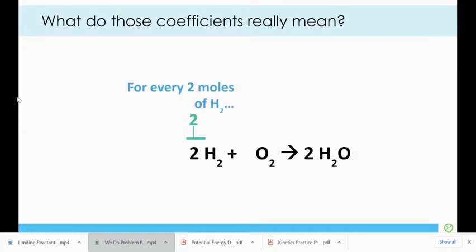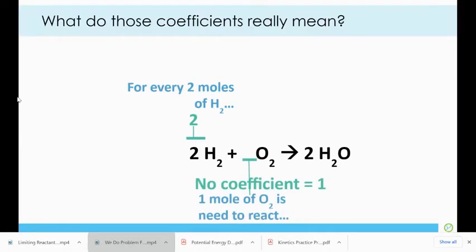So what this really means is that for every two moles of hydrogen, one mole of oxygen is needed to react to produce two moles of water. That's what a balanced chemical equation means.